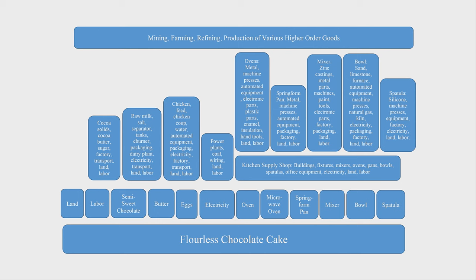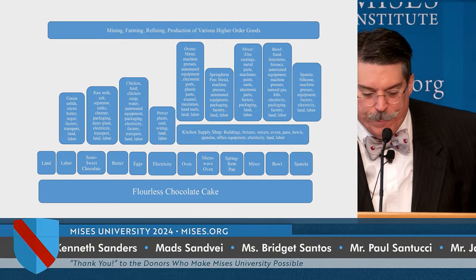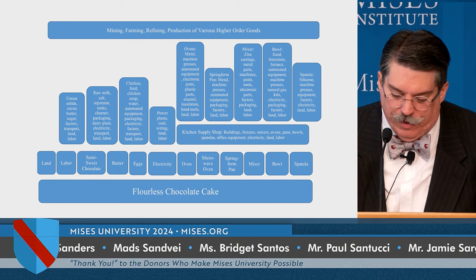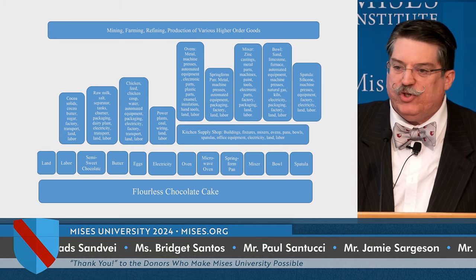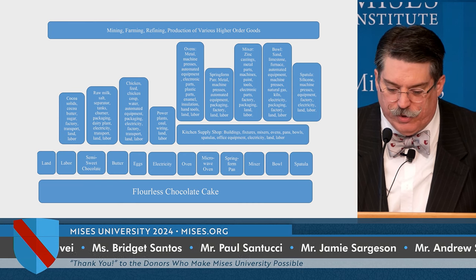For each of these capital goods — the semi-sweet chocolate, the eggs, the butter, the electricity, the oven, the microwave oven — there is an even higher stage in which these goods are produced.